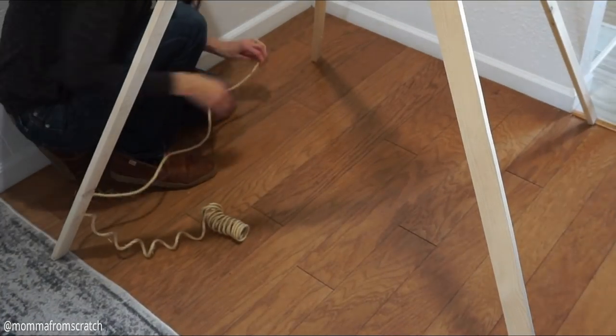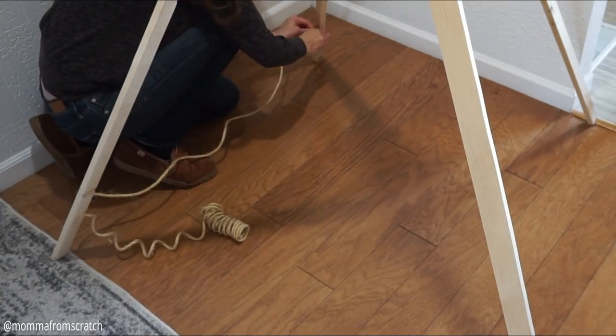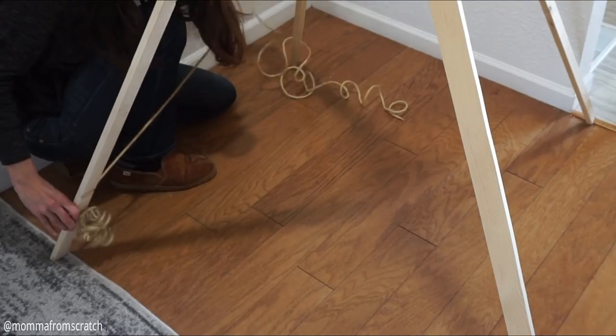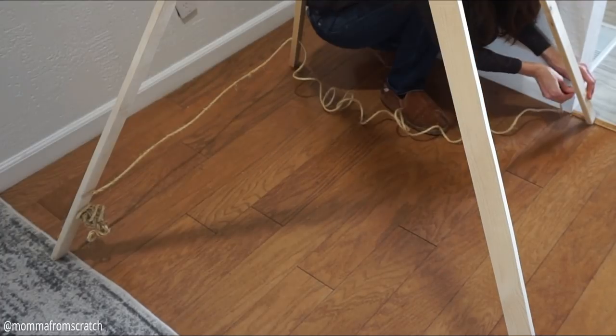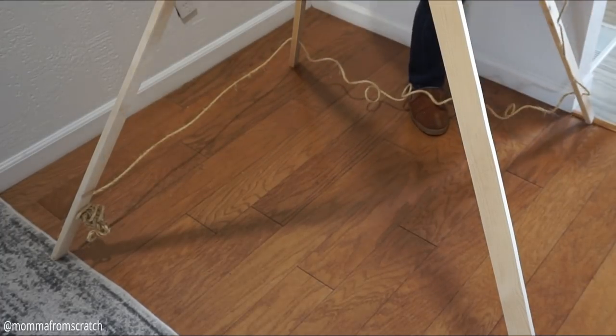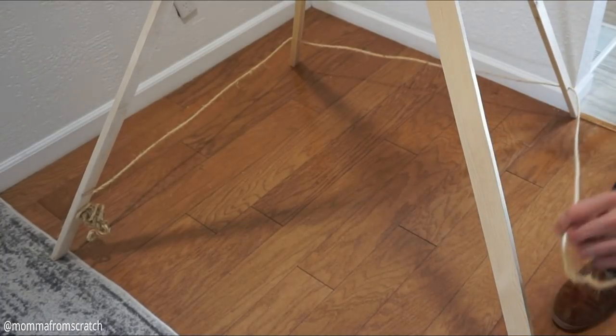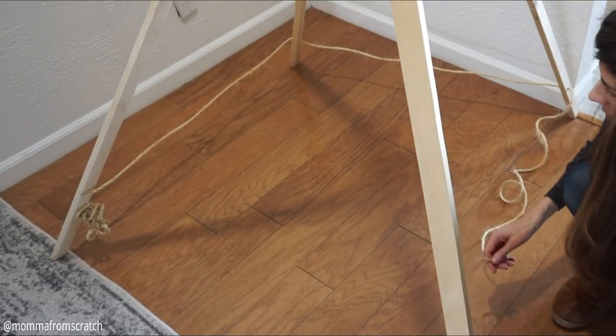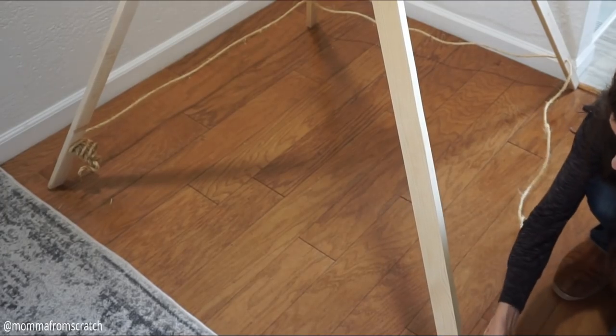Now this next step is optional. I went ahead and put a hole in each of the boards on the very bottom, about four to five inches from the bottom, and then just funneled my rope through, tying that knot that way the boards would not separate anymore because my kids will be playing in this. Again, it's optional, completely up to you.